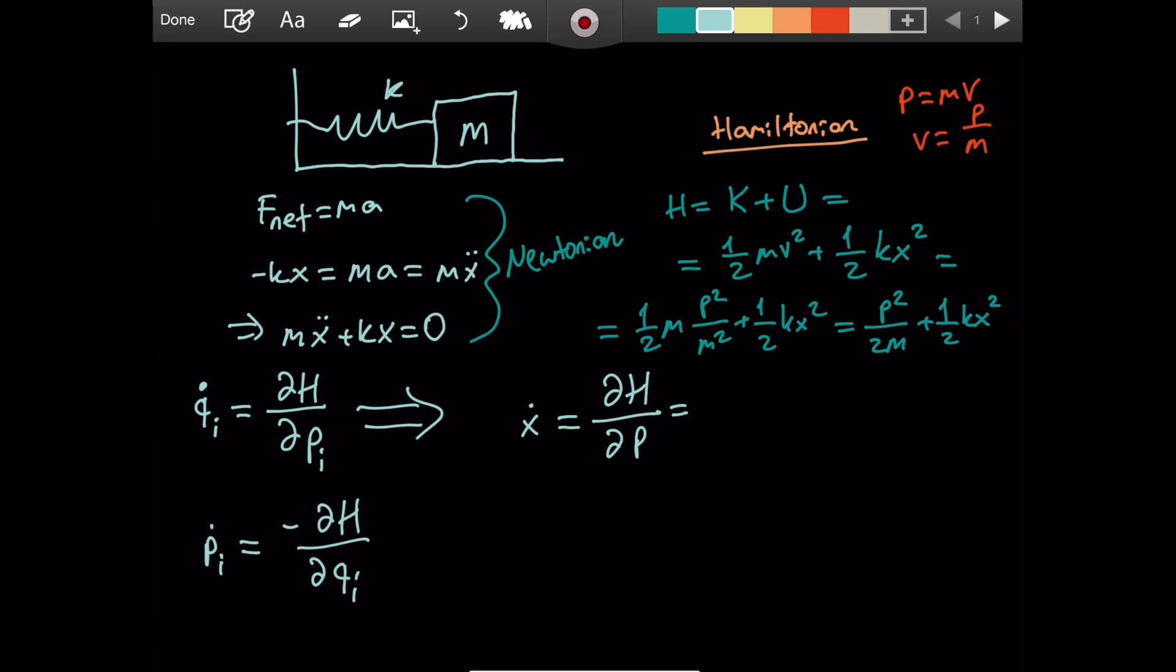Now let's take the partial derivative of this expression with respect to momentum. We just ignore the second term. This is a partial derivative. Now for this term, we have p squared over 2m. So 2 will come in front, cancel with this 2, and we will have p over m as the result of the partial derivative.